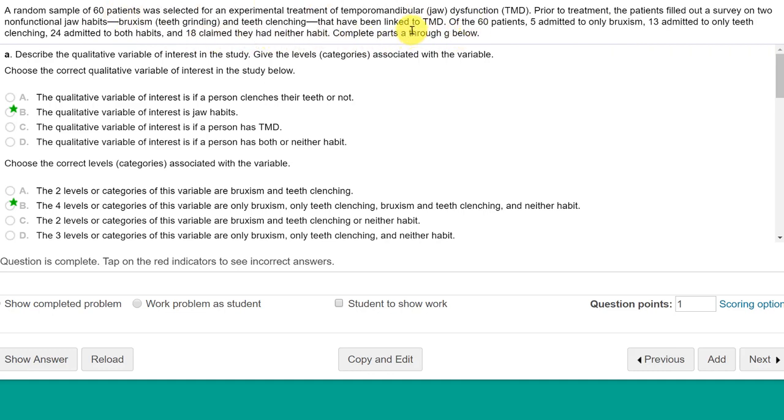So what kind of a test is this? When I read this, I see we have one variable, and that is the patients who admitted to various things about whether or not they have TMD. We're given 60, and we've given counts 5, 13, 24, and 18, which are categories, counts, in that one variable. So that tells me that this is a one variable test, and since we're given counts, we would have to do a chi-square test.